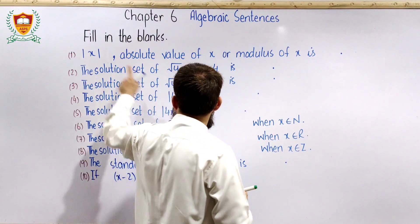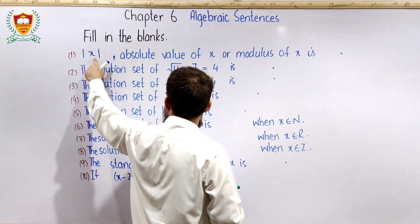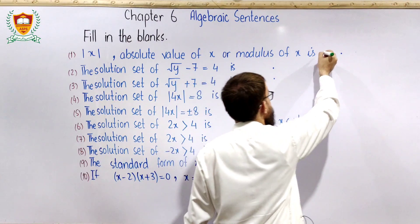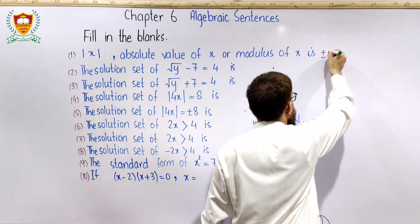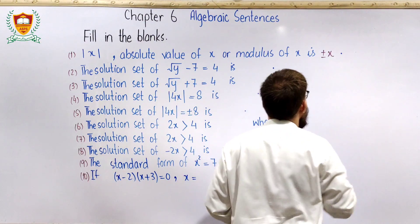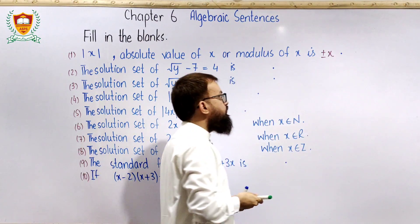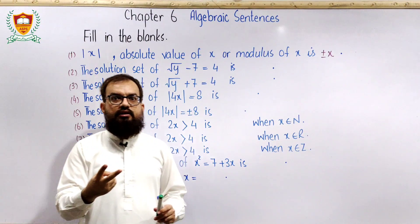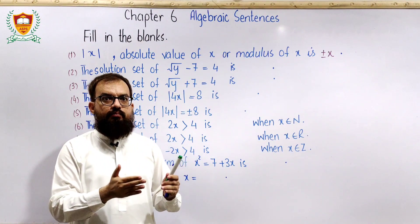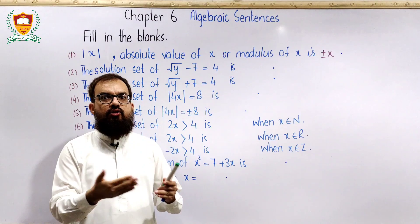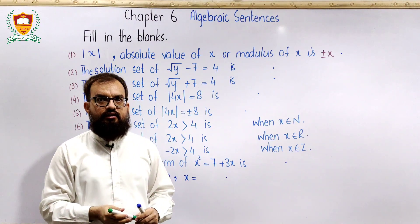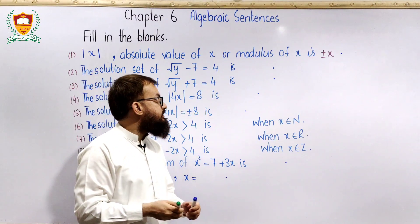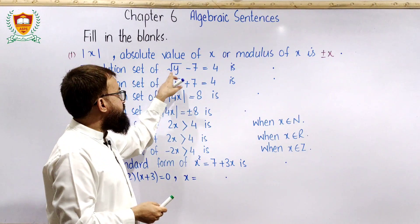Absolute value of x کو ہم plus minus x لکھتے ہیں، کیونکہ جب absolute value کا sign ہٹایا جاتا ہے تو دو possibilities بنتی ہیں — ایک کے ساتھ plus کا sign اور دوسرے کے ساتھ minus کا sign لکھتے ہیں۔